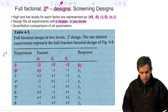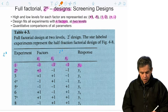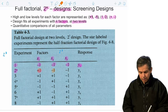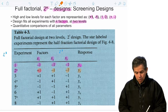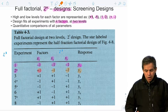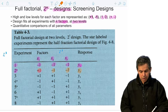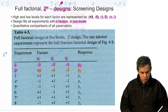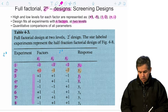In the second experiment, the first factor is at the high level, the second factor is at the low level, and the third factor is at the low level. We do the measurement using these levels and get a different response. In this 2 to the third design, we have altogether eight experiments combining different permutations of high and low levels with the corresponding measurements.